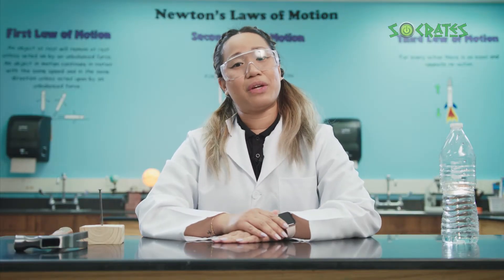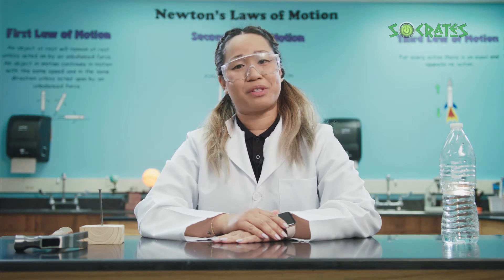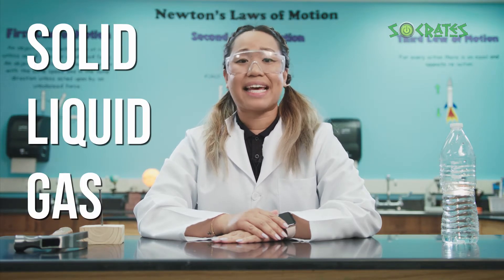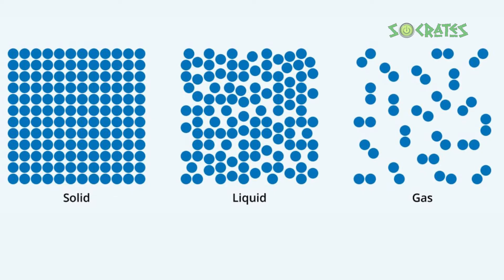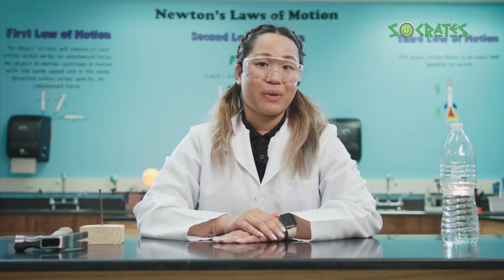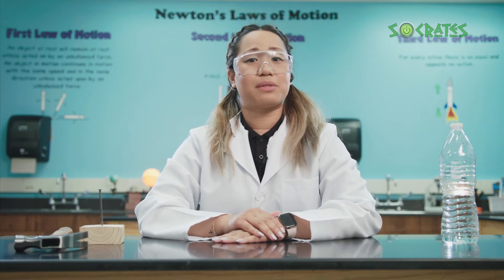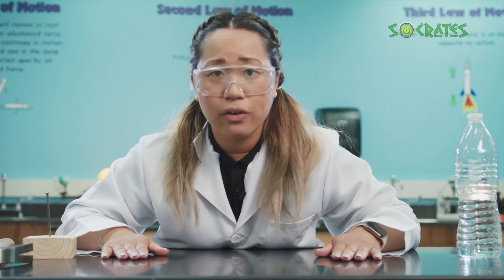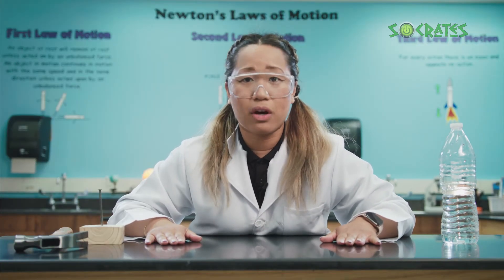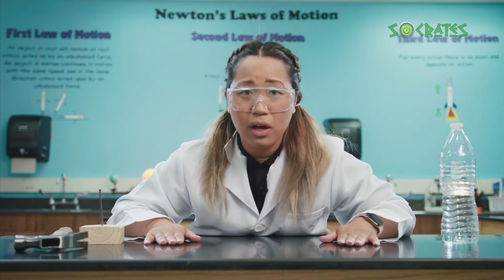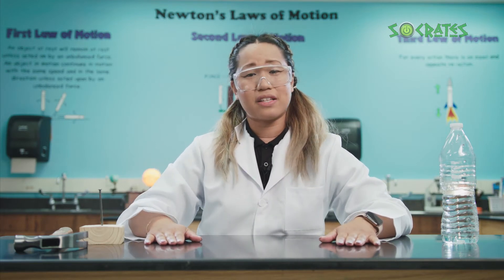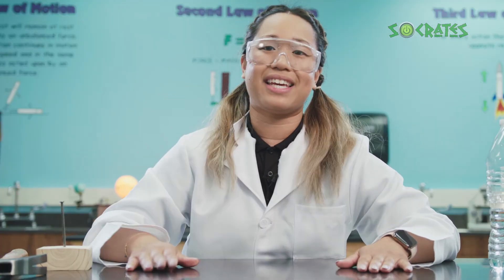Now we know more about the three different forms of matter: solid, gas, and liquid. All of these forms are made from tiny particles called atoms and molecules. Although we were able to use models to make observations, the actual size of atoms and molecules are incredibly tiny — trillions of times smaller than the dots or spheres we used to represent them. In fact, atoms and molecules are so small that millions of them would fit in the space of a single period at the end of a sentence.